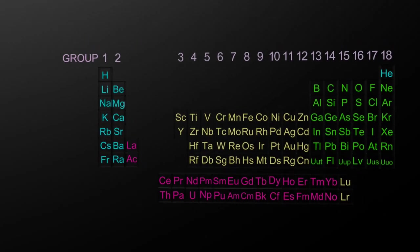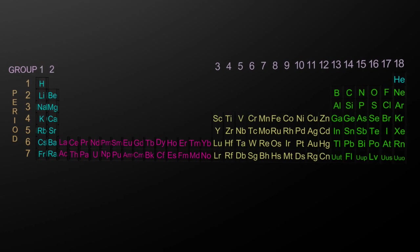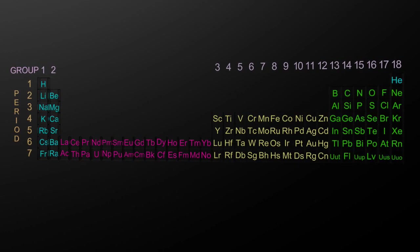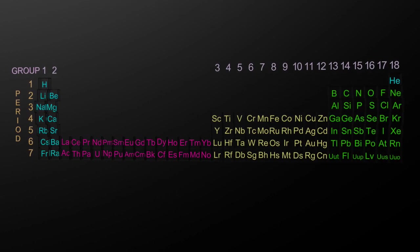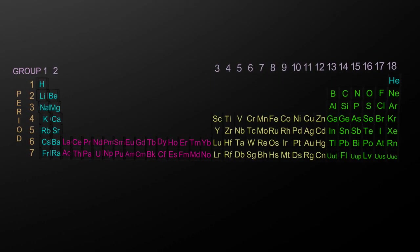Expanding now to the full periodic table, we'll show you the periods. Periods are horizontal rows, and there are seven of them.